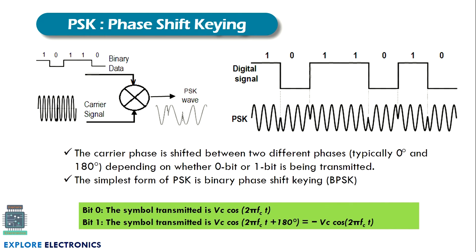Next we have phase shift keying, or PSK. Compared to phase modulation in analog communication, PSK uses binary data such as 1-0-1-1-0 with a high-frequency carrier. When given to the product modulator, the phase of the signal is varied. When we have 1 at the input, the phase is maintained; at a transition from 1 to 0, the modulator shifts the phase by 180 degrees. Similarly, at every 1-to-0 or 0-to-1 transition, the phase changes by 180 degrees. This is how phase shift keying works.